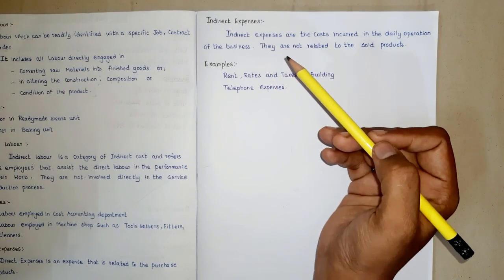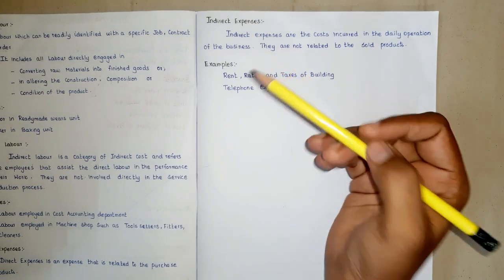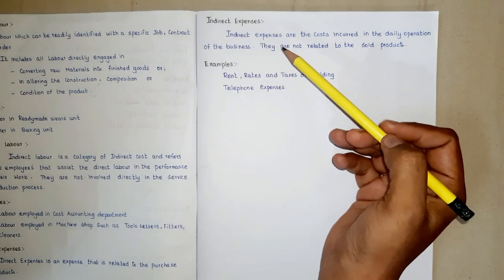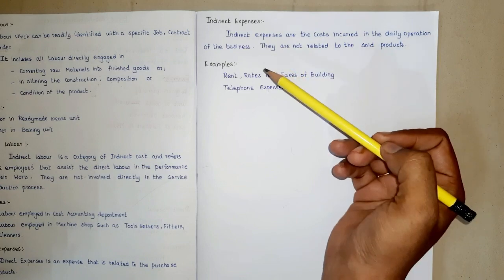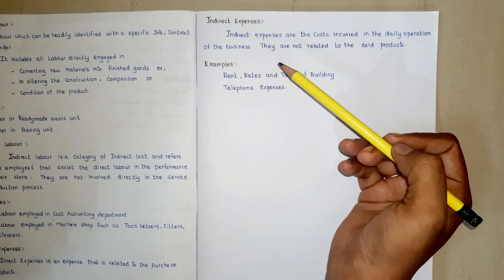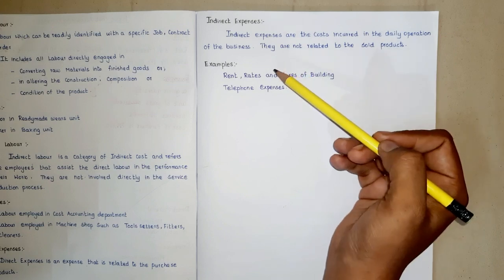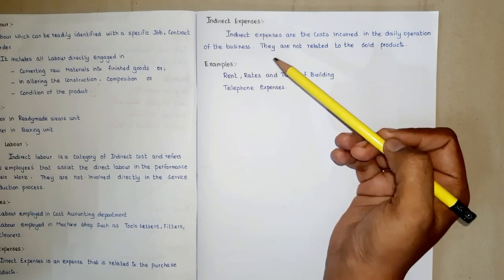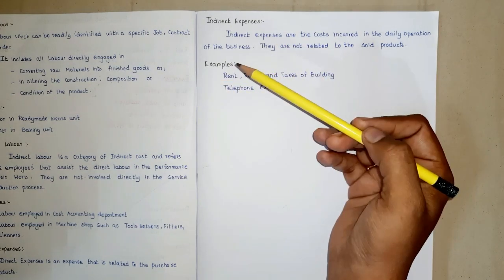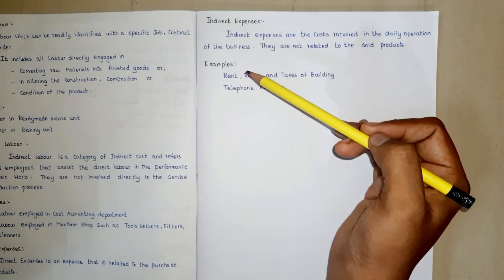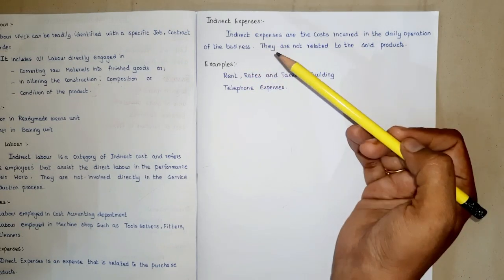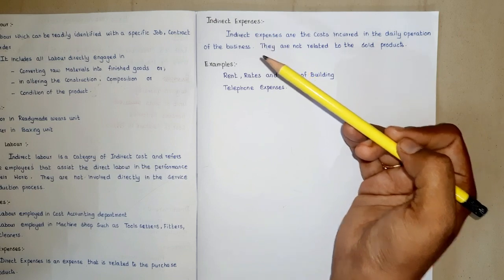For example, when a book is printed, it is rather easy to know how much money has been spent on the paper used and also on wages paid to the workers who were engaged in composing the matter, proofreading, and machining the book. Such are the instances of direct expenses.